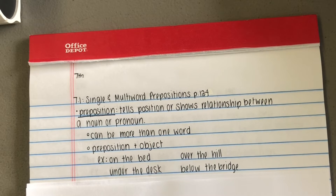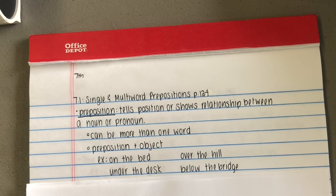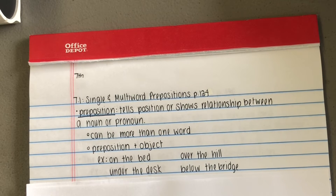For exercise one, identify the prepositional phrase — that's going to be a preposition plus an object. Then you're going to name each preposition. Number one says: people owe a debt to the painter, George Catlin. Pause the video and try to guess that one on your own.